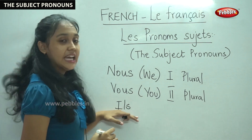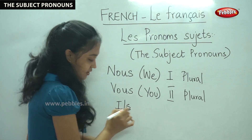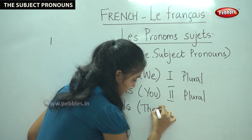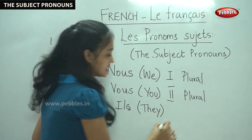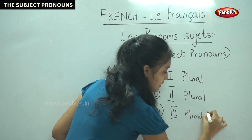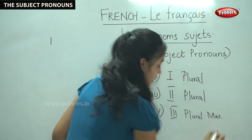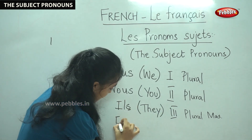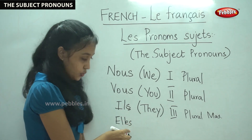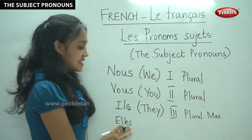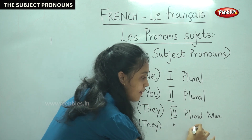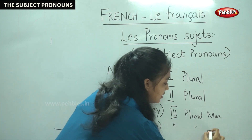The next one is Ils. Though there is an S here, it is not pronounced — it is Ils. Ils means they. It is in the third person plural and masculine. The last pronoun is Elles. Similar to Ils, here also we have an S which denotes that it is in the plural form, but it is pronounced Elles. Elles also means they — it is the third person plural but in the feminine form.